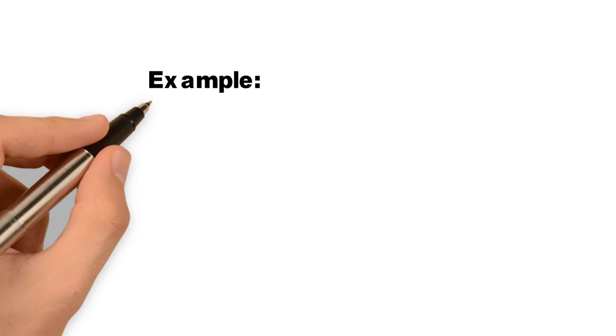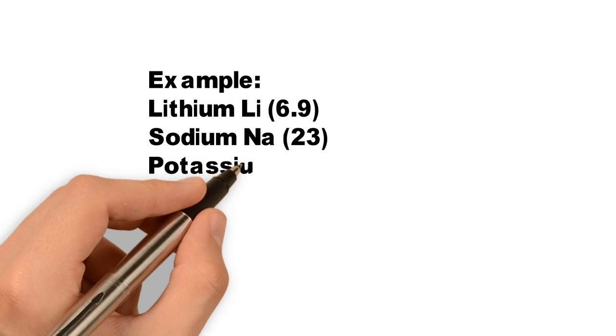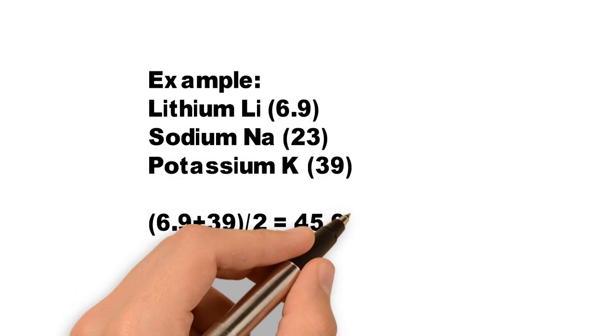For example, the mean of the atomic masses of lithium and potassium is equal to the atomic mass of sodium, which is the middle element of lithium and potassium.